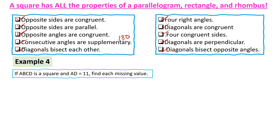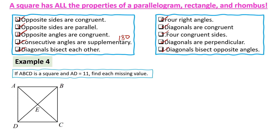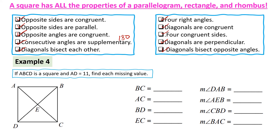Let's try Example 1: ABCD is a square, AD is 11 — find each missing value. Since it's a square, all four sides are 11. Since it's also a rhombus, the center angle is 90 degrees. Now, BC is 11. For AC, which is a diagonal, I need to calculate it.